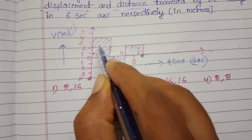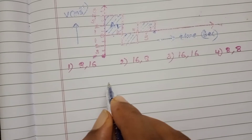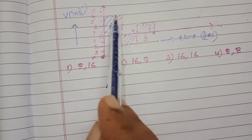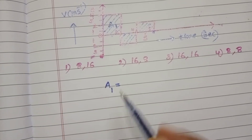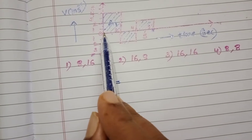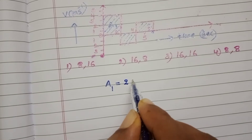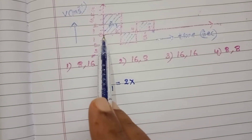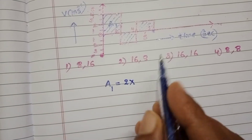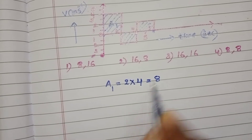A1 is the area of the first part, which is rectangular in shape. So A1 equals length into breadth. Here, from 0 to 2 seconds, time is 2, and velocity is 0 to 4 meters per second. So 2 into 4 equals 8.